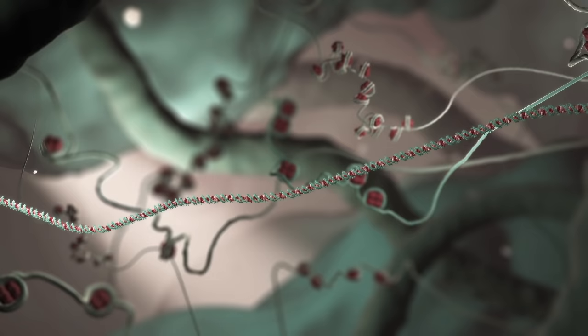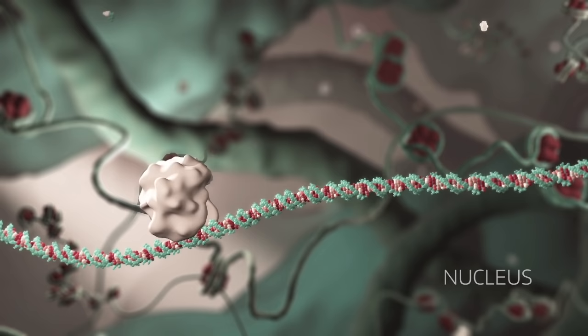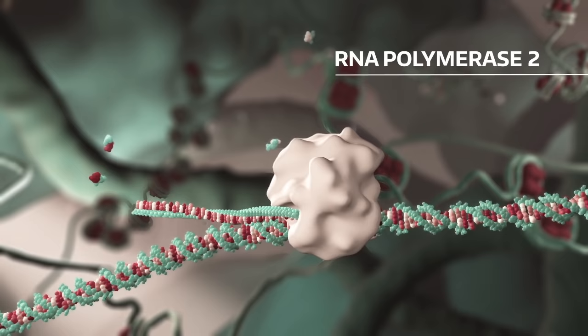Similar to proteins, the genes coding for microRNAs are contained in the nucleus in the DNA. Each gene is transcribed by RNA polymerase II, which produces either a regulatory or a messenger RNA.